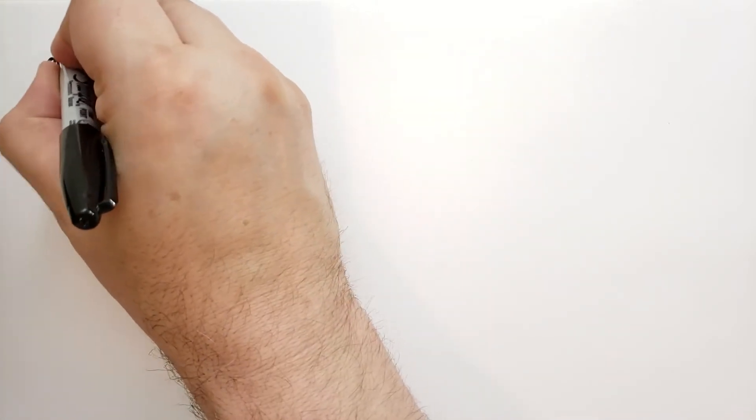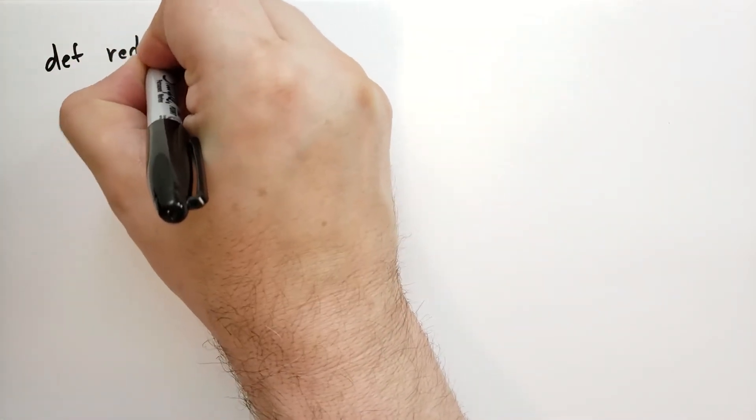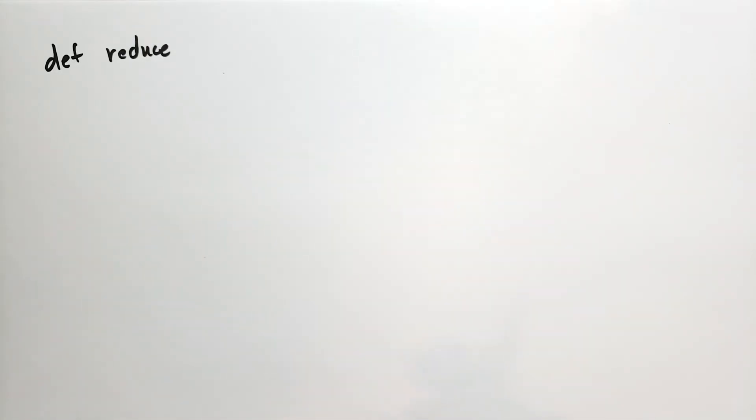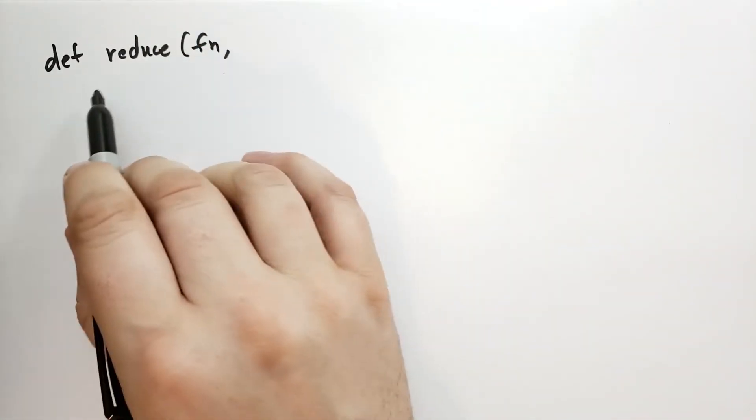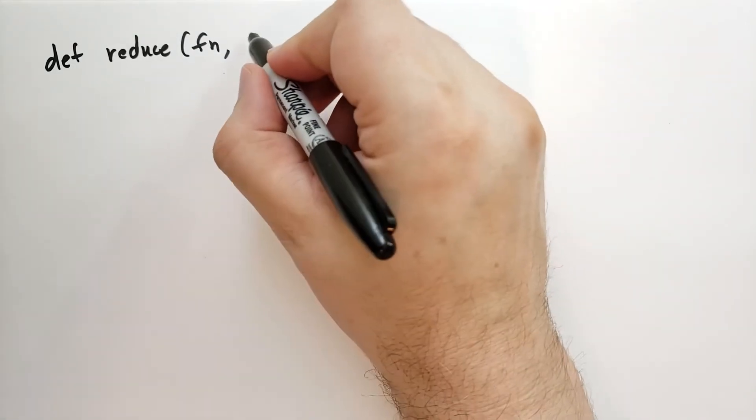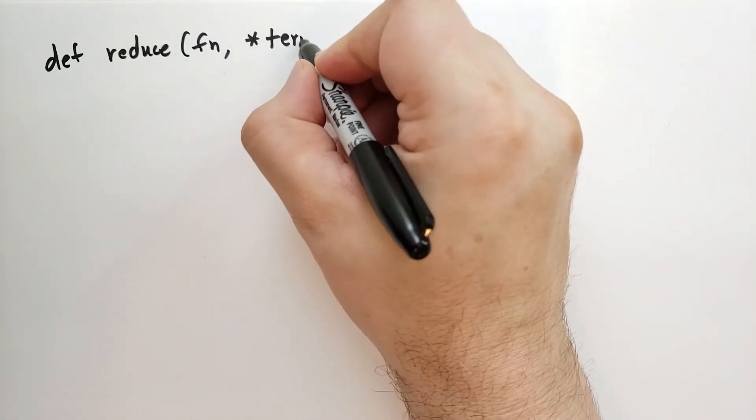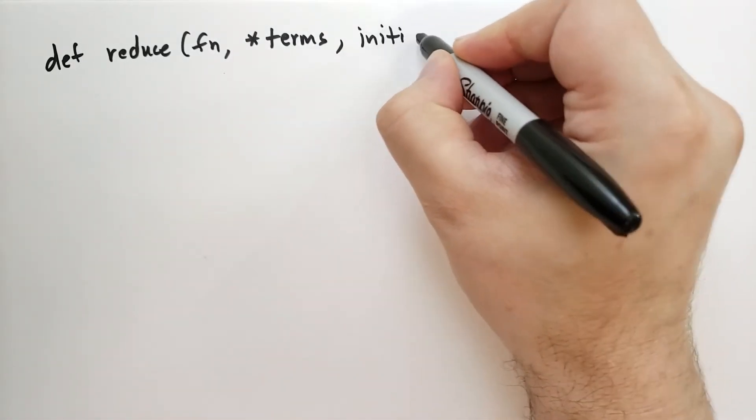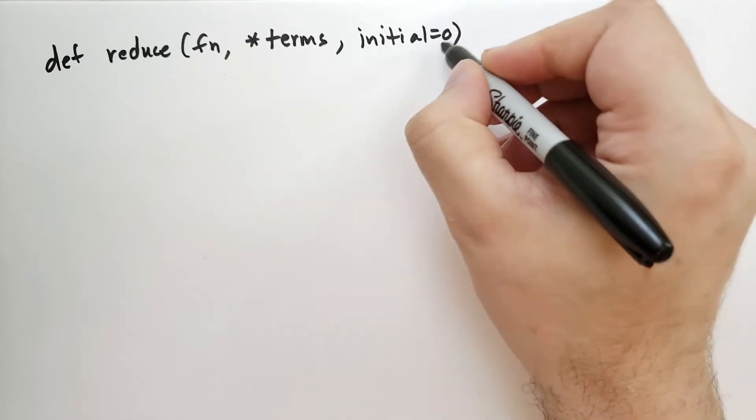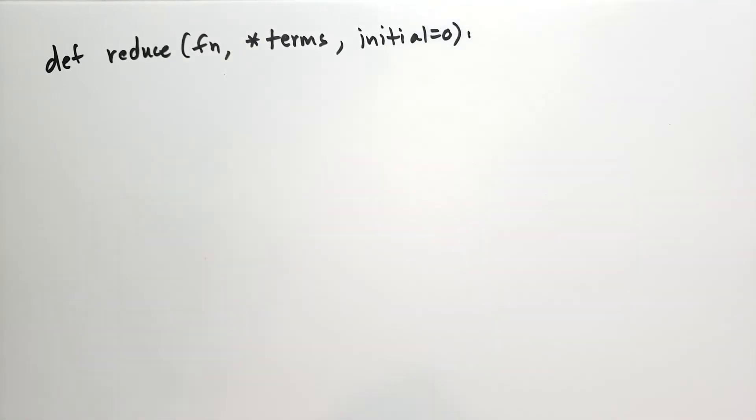This is a very powerful thing. I'm going to use an example here to show you how we might use this in practice. So this is a recursive reduce function. What reduce does is it takes a sequence of things and applies a function to each one and returns the eventual result. So reduce is going to take a function, it's going to take an arbitrary number of terms, and then you can specify as a named parameter the initial value, but it's going to default to 0.